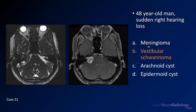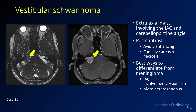The answer is vestibular schwannoma. This is a classic appearance: a mass expanding the internal auditory canal, extending into the CP angle, causing mass effect on the pons and middle cerebellar peduncle. On T2, you can see a nice CSF cleft with the pons, so it's not coming from the pons. The best way to differentiate from meningiomas is involvement and expansion of the IAC. Meningiomas tend to be centered outside the IAC and don't cause that kind of expansion.